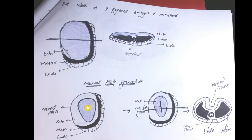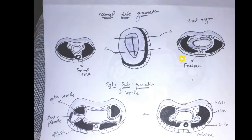The surface ectoderm gets thickened and this thickened area is called the neural plate. A groove appears in the neural plate, and this groove deepens and deepens — here is a cross section of it. This groove deepens further and finally the two lips meet one another.